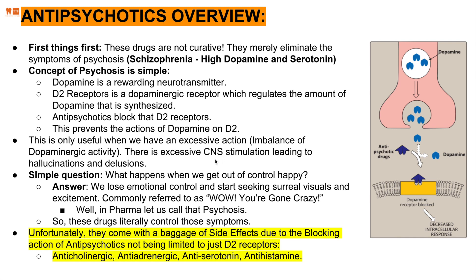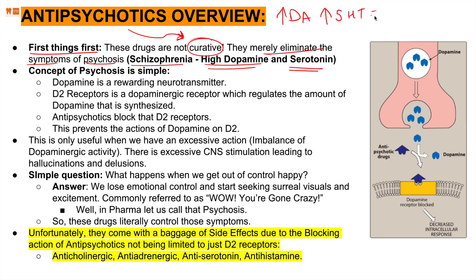As an overview of antipsychotics, first and most importantly these drugs are not curative. Antipsychotics merely eliminate the symptoms of psychosis, such as schizophrenia. Schizophrenia occurs when there is an excess of dopamine and serotonin in the body. Too much dopamine and serotonin leads to psychosis. Dopamine is a rewarding neurotransmitter, and the D2 receptor regulates the amount of dopamine synthesized.